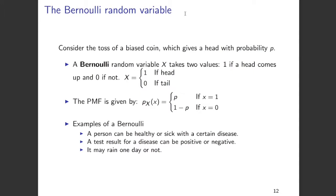Let us assume that you have a biased coin which gives a head with probability p, and a tail with probability 1 minus p. A Bernoulli random variable can only take two values. In this particular example, let us assume that you have a Bernoulli random variable x, and it takes a value 1 if a head comes up, and a value 0 if it is a tail. So x equals 1 if the coin toss results in a head, and x equals 0 if the coin toss results in a tail.